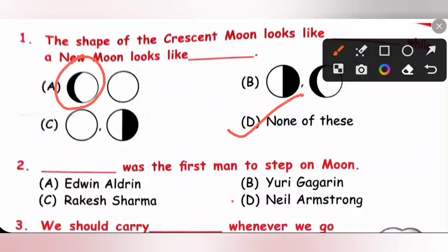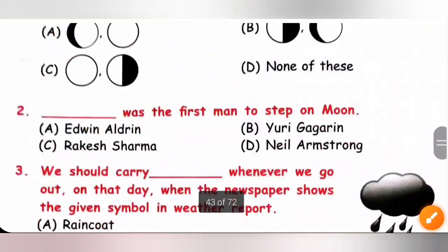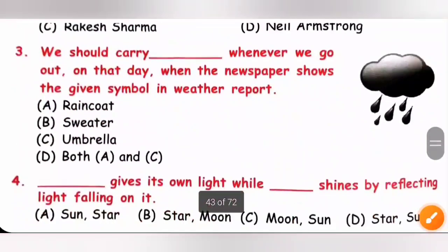Question 2: Who was the first man to step on the moon? Neil Armstrong was the first man to step on the moon. So option D is the correct answer.